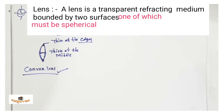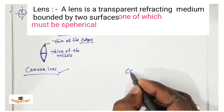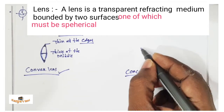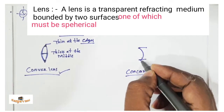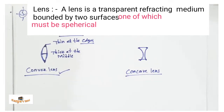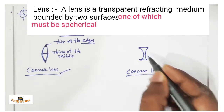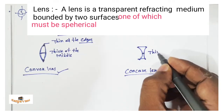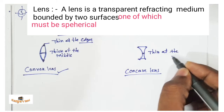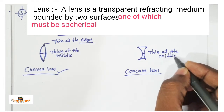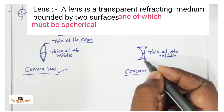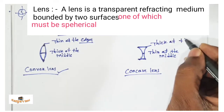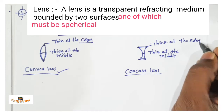Now let's go to the other lens — that is the concave lens. If you observe this lens, at the middle it is thin. And at the edges, they are thick. So, thin at the middle and thick at the edges.